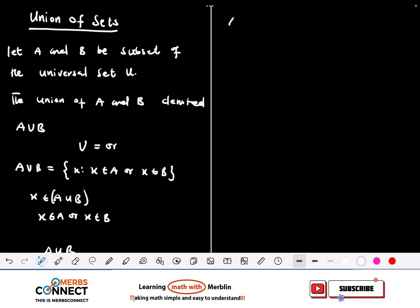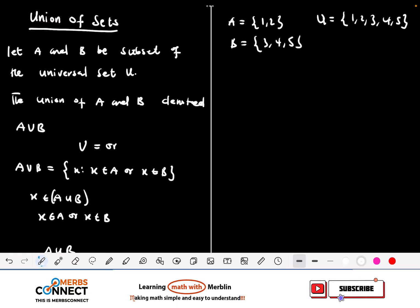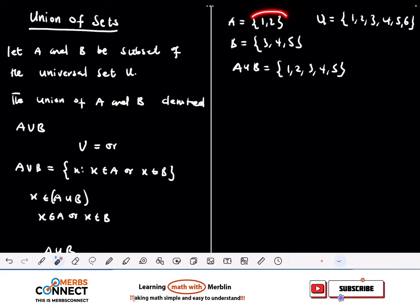Let's take an example. Suppose A = {1, 2}, B = {3, 4, 5}, and the universal set U = {1, 2, 3, 4, 5, 6}. Then A union B contains all the elements in A and all the elements in B, which gives us {1, 2, 3, 4, 5}.